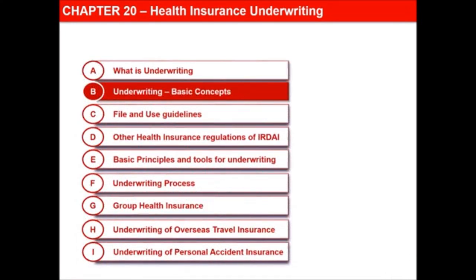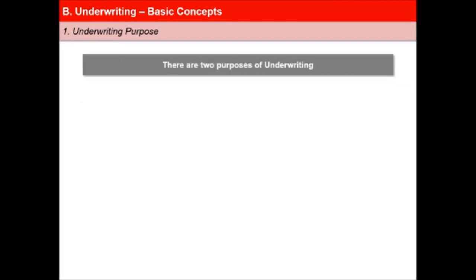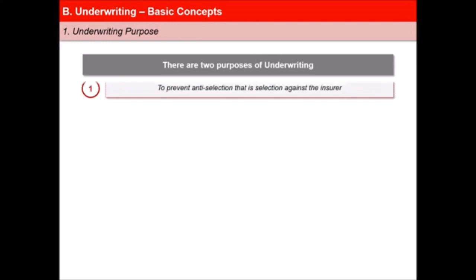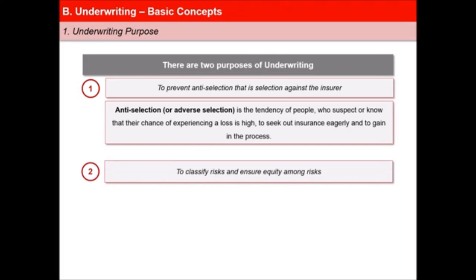In this next video of the lesson, Health Insurance Underwriting, we will learn about some basic concepts of underwriting. There are two purposes of underwriting. First is to prevent anti-selection, which means the selection against the insurer. Anti-selection or adverse selection is the tendency of people who suspect or know that their chance of experiencing a loss is high, to seek out insurance eagerly and to gain in the process. And second is to classify risks and ensure equity among risks.